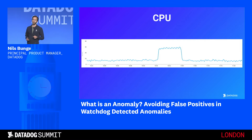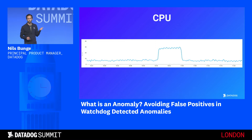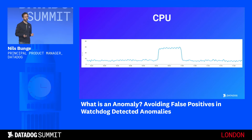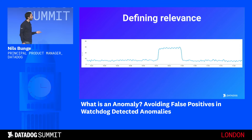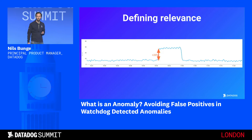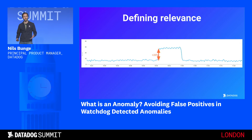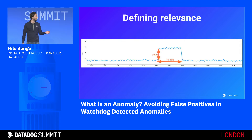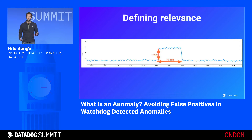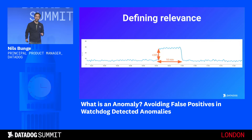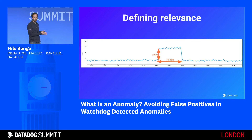If we go back to our example, let's imagine it's CPU. Would you wake someone up for this? Probably not. It goes from 10 to 30 percent — for CPU that's usually fine. You need to start caring when it goes really up, like 80 or 90 percent. Moreover, it only lasted 10 minutes. CPU going slightly up for 10 minutes is likely not something we would care about. Note that we only know it lasted 10 minutes because we're looking at it after the fact — it's not something you can predict while it's happening.